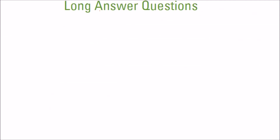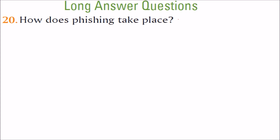Now some long answer questions on network security and societal impacts of IT. How does phishing take place? You open a bank website that looks exactly like your real bank. You enter your credentials, it says the password is wrong, and by the time you re-enter, your credentials may have gone to an imposter. Then the actual bank website appears, you log in thinking nothing happened — but your data has already been stolen.